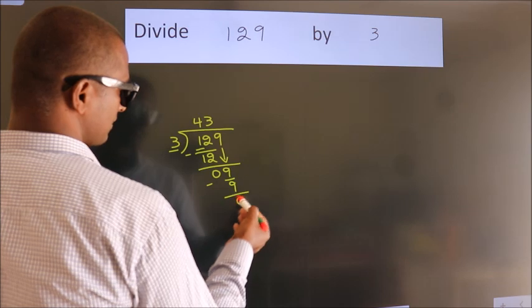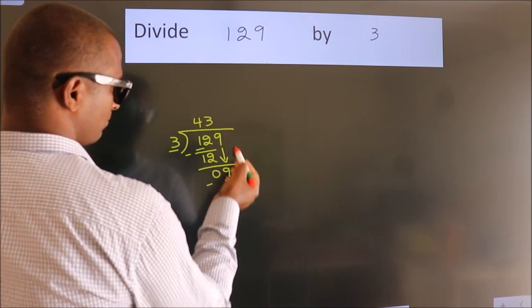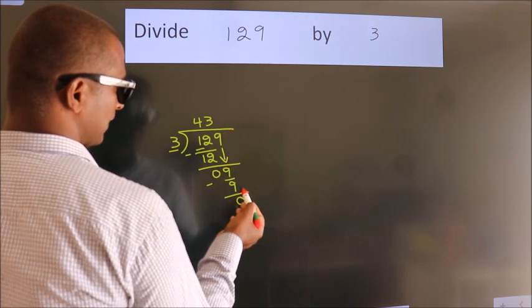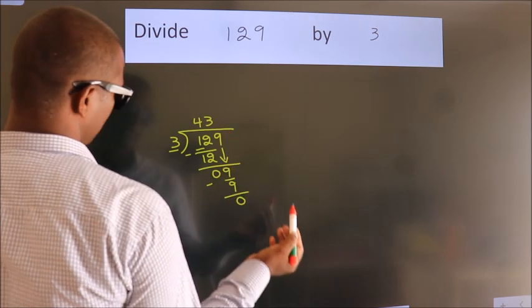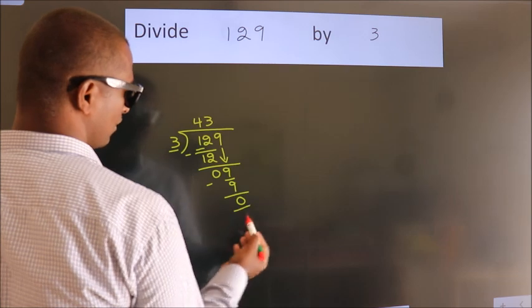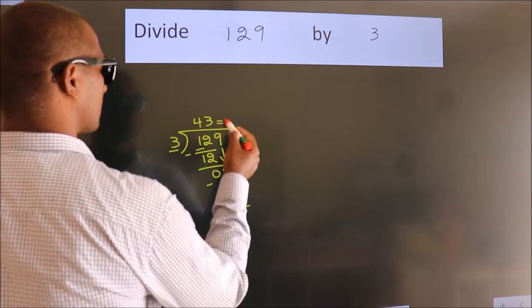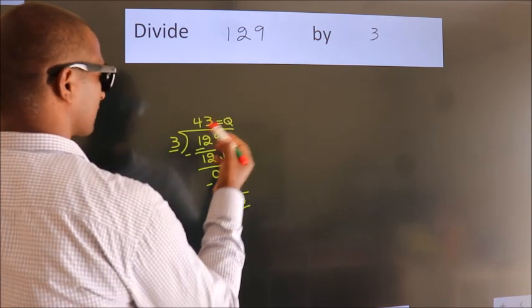After this, there are no more numbers to bring down and we got remainder 0. So this is our quotient.